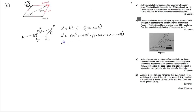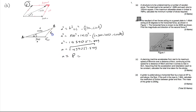Taking the square root of 1,439,057.899 gives us P, which equals 1199.61 newtons. That's the magnitude of P. Now we need to find the direction, so we need to work out the angle theta.